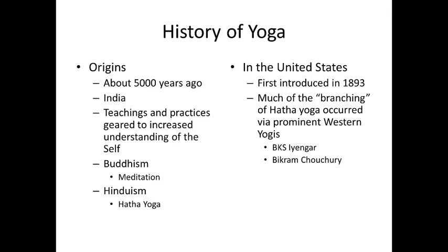In the U.S., yoga was first introduced in the late 1890s. Much of the branching we think about — all those different kinds of yoga on a group exercise schedule — actually occurred in the U.S. and Canada. Two names I want you to know are BKS Iyengar and Bikram Chuchuri. One of those names probably sounds familiar already, and I'll talk more about their specific influence later in this lecture.